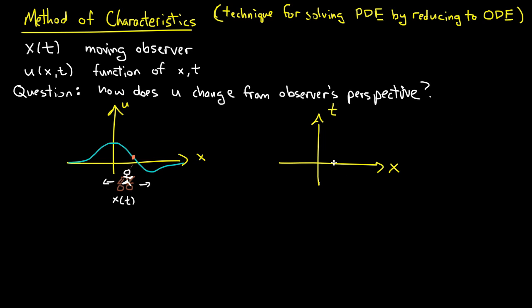Let's say that here's my path. I start at some point and here I go. My path is x of t, t. And you know that at every point in this plot, everywhere, I have a value of u of x,t. And so the question, how does u change from the observer's perspective, says how does u change when I move along this line?